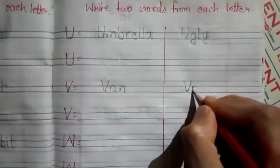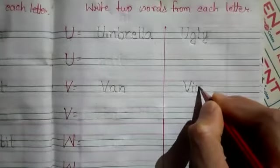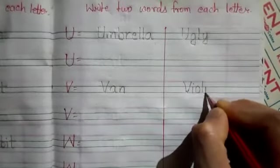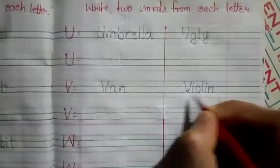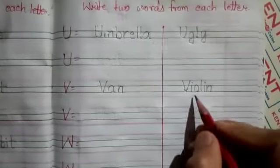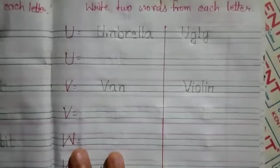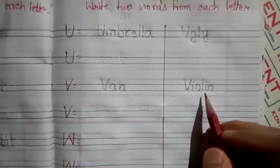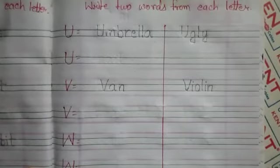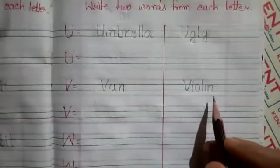Next is V I O L I N, violin. Violin means violin. It is a musical instrument.